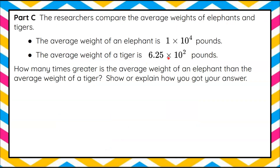Let's look at part C. The researchers are going to compare the average weights of elephants and tigers. The average weight of an elephant is 1 multiplied by 10 to the fourth pounds — that's in scientific notation. The average weight of a tiger is 6.25 multiplied by 10 squared pounds, also in scientific notation. We want to know how many times greater is the average weight of an elephant than the average weight of a tiger, and we need to show or explain how we get our answer. Go ahead and pause, do your best work, and then come back.